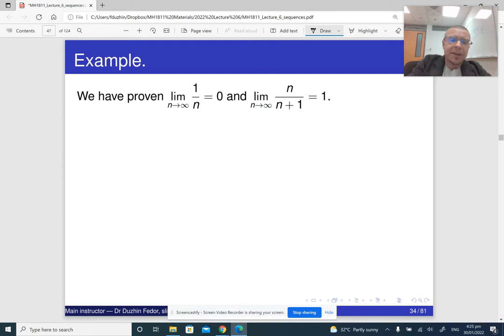So let's say we want to find the limit of something like one over n plus n over n plus one squared divided by one over n minus five times n over n plus one cubed as n goes to infinity.